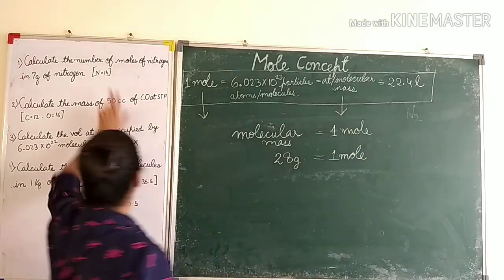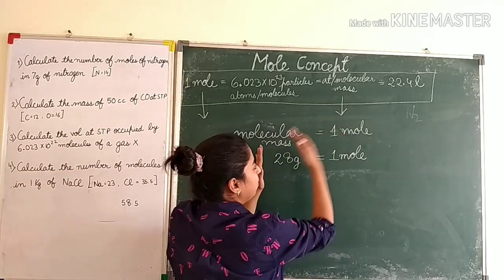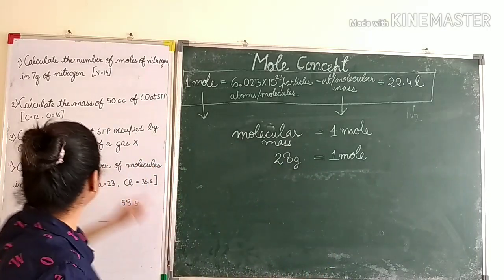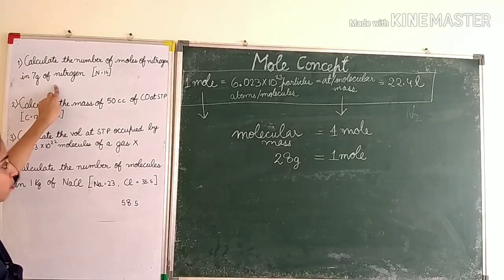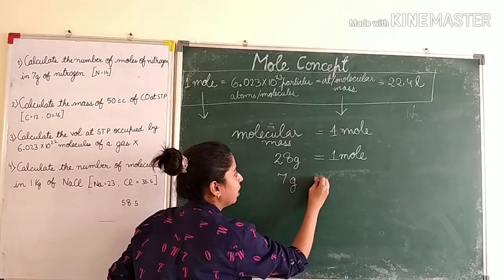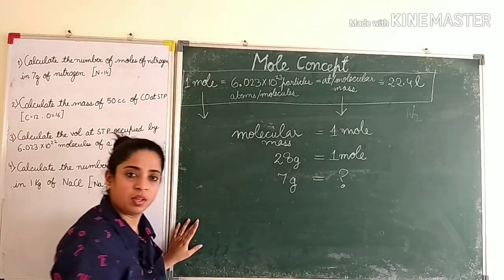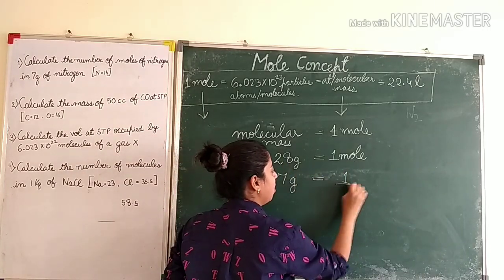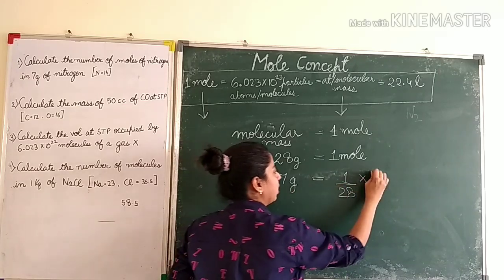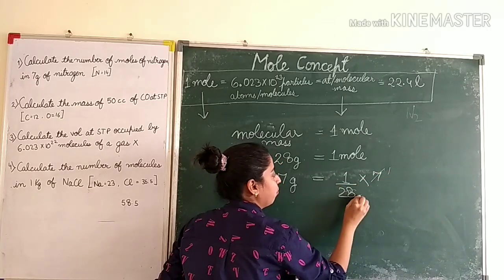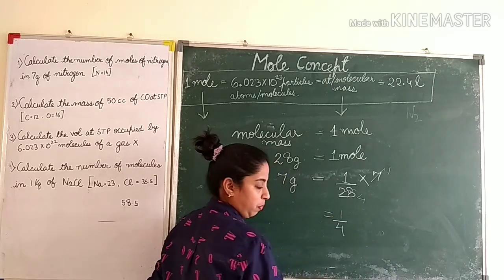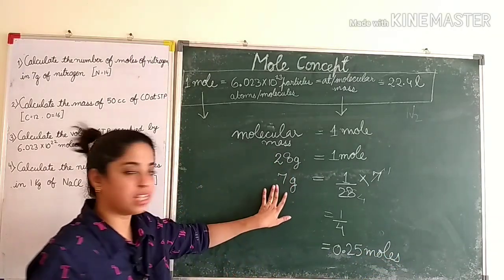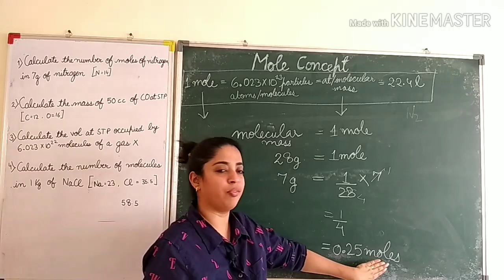Using unitary method: keep the asked quantity on the right-hand side. 28 g → 1 mole. For 7 g → (1/28) × 7 = 1/4 mole = 0.25 moles. So 7 grams of nitrogen contains 0.25 moles.